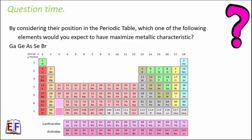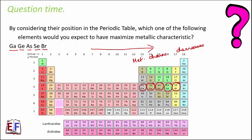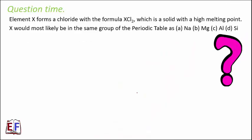By considering their position on the periodic table, which of the following elements would you expect to have maximum metallic character: gallium, germanium, arsenic, selenium, or bromine? Looking at their position, all of them belong to the same period. In a period, metallic character decreases as we move from left to right. Therefore, out of these, the maximum metallic characteristic will be of gallium.